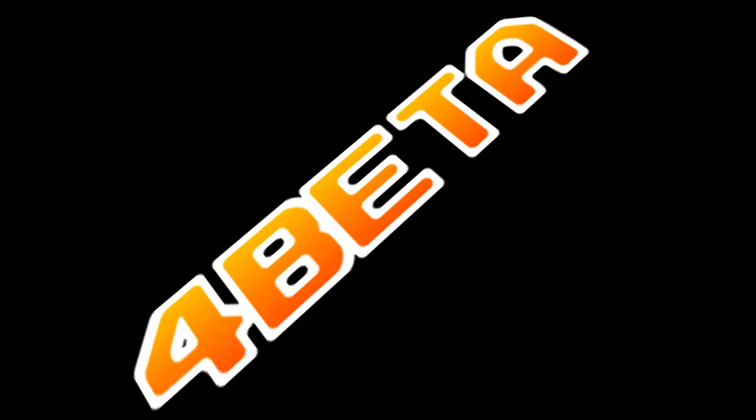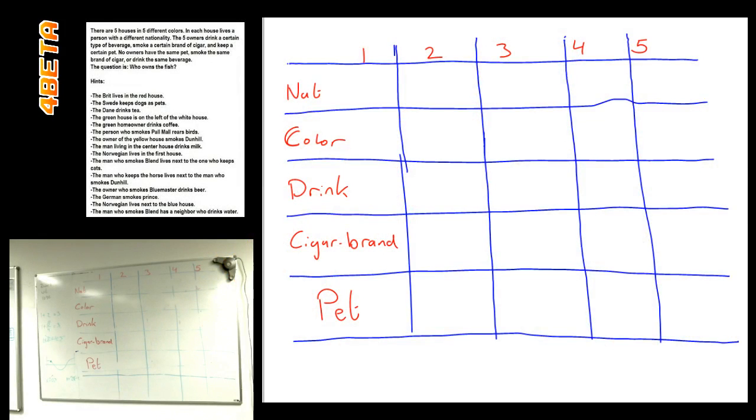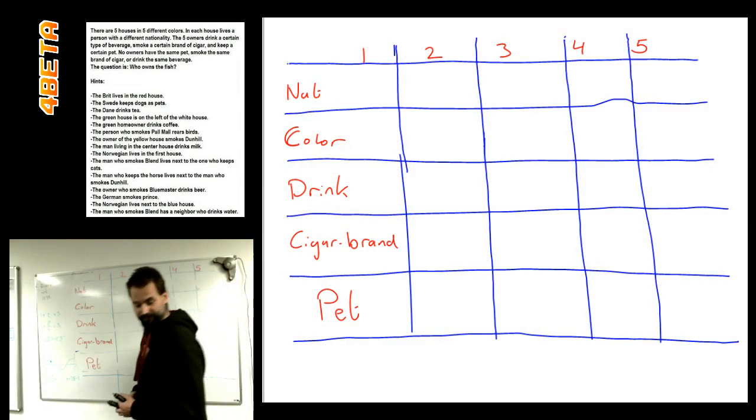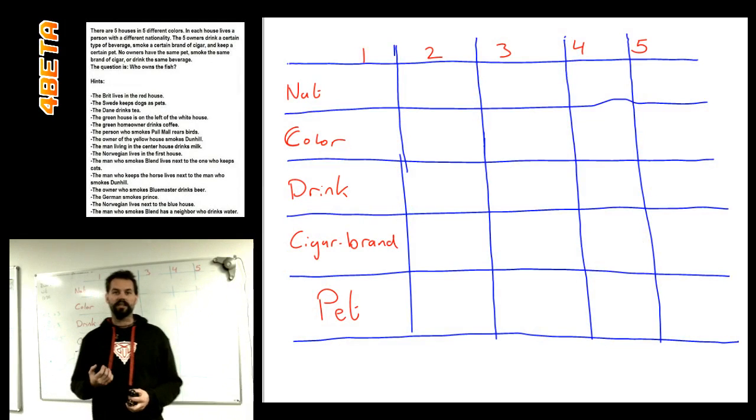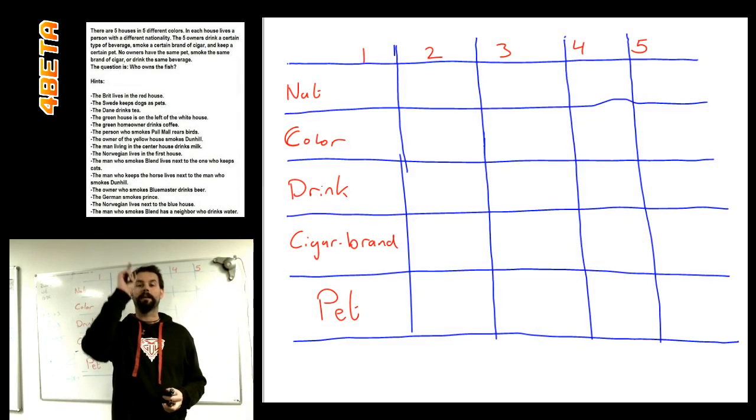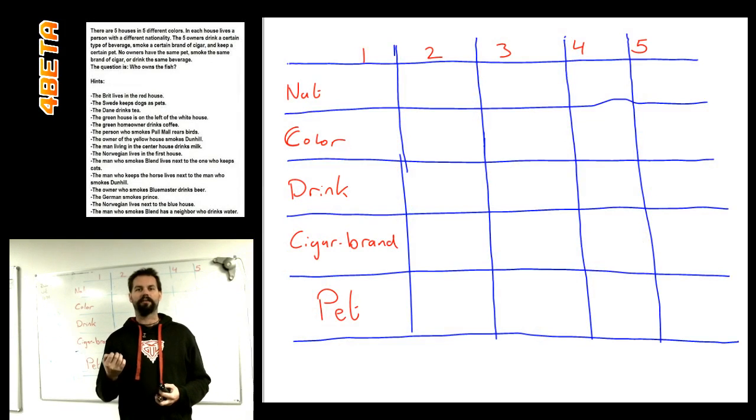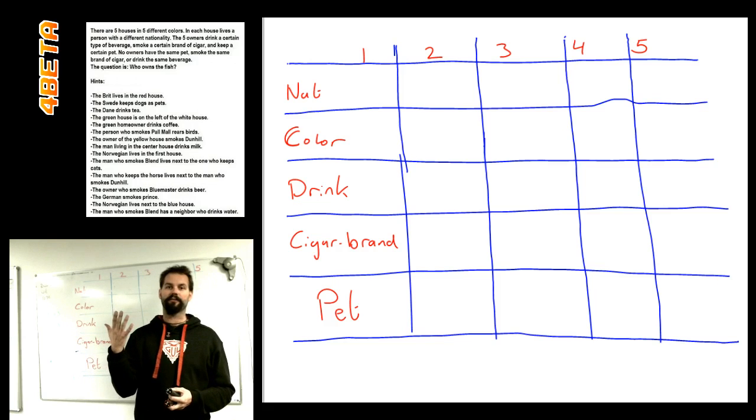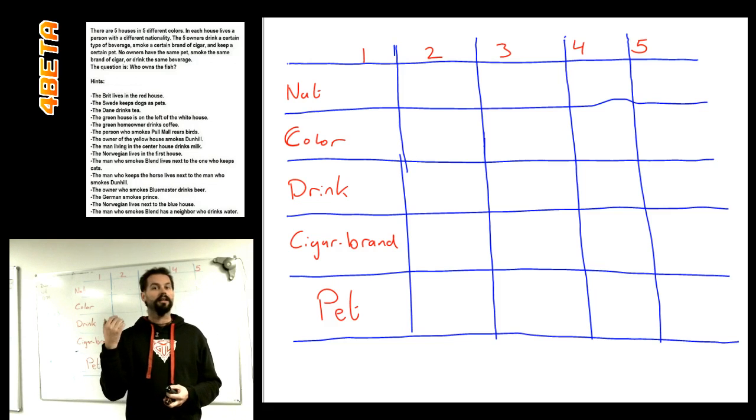Okay, so a long time ago Einstein made a riddle. And this riddle consists of, well I put it up there, but this riddle consists of a story that there are five houses with five different people of five different nationalities.